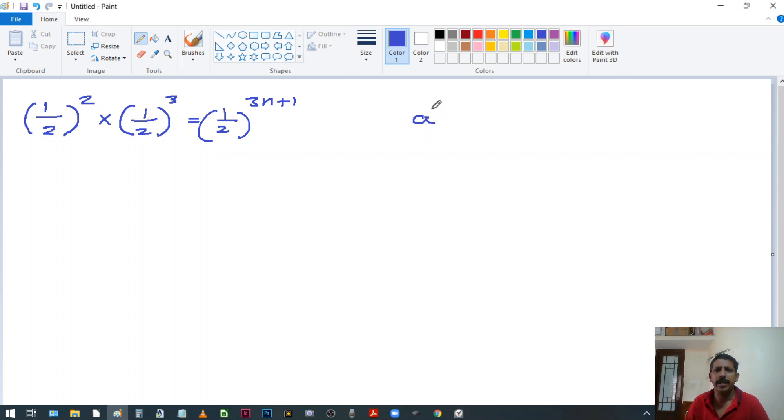Suppose I'm going to say a raised to the power n and again multiply by a raised to the power m. That means the powers are different, the bases are same. What is base? a is the base here. And what are the powers? For a, the power is n here, and for the other a, the power is m. So both the powers are different.